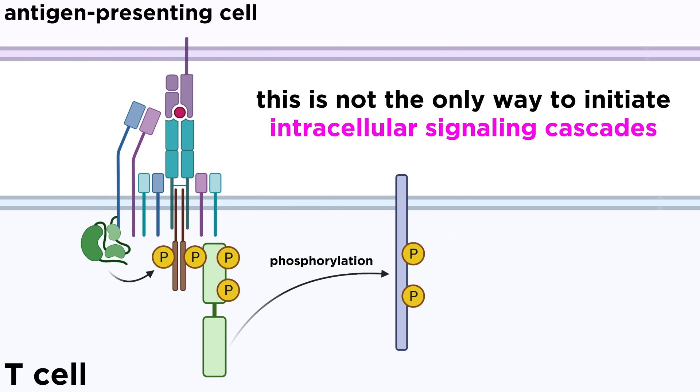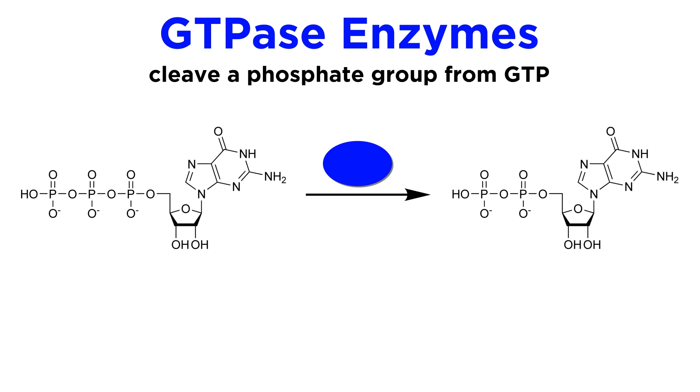Activation of kinases is not the only way for receptor binding to initiate intracellular signaling cascades. Many receptors are coupled to large or small GTPases, which are enzymes that convert GTP, or guanosine triphosphate, into GDP, or guanosine diphosphate.